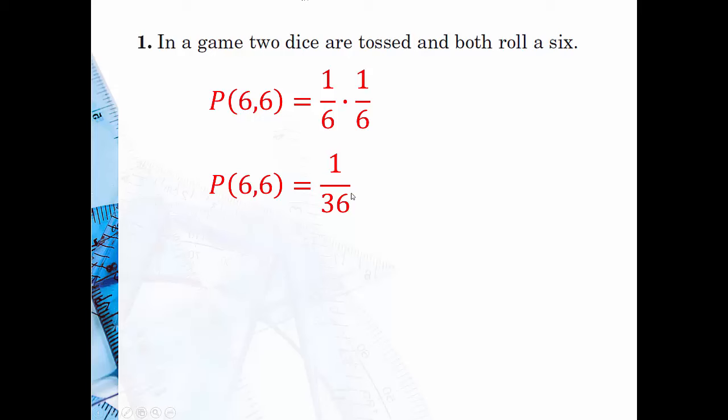By the way, you could also do sample trees if you ever get stuck on these. What are the choices for my first roll? You could go one, two, three, four, five, six, and then one, two, three, four, five, six for each of those. You can see there are 36 total outcomes.